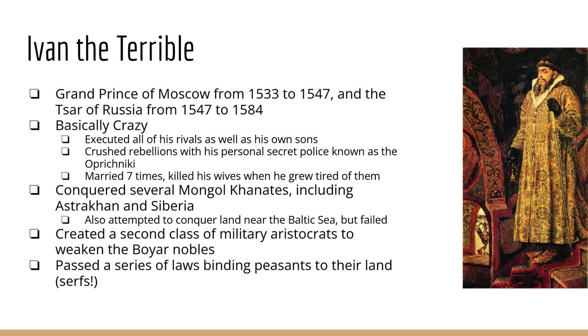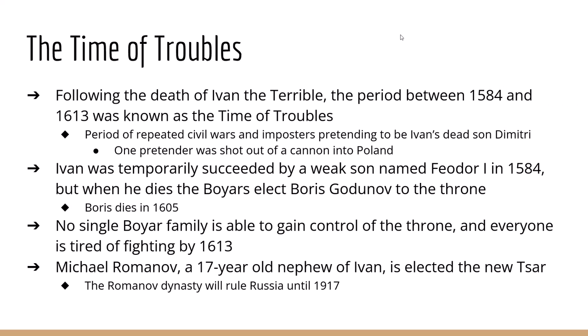Ivan conquered several Mongol Khanates, including the Khanate of Astrakhan and the territory of Siberia. He attempted to conquer lands along the Baltic Sea — modern-day Latvia, Lithuania, and Estonia — but failed. He elevated the military-stock aristocracy to be nobles in order to weaken the existing noble class known as boyars, believing this would give him more control in government. Finally, he passed a series of laws binding free peasants to their land as serfs. Serfdom had nearly disappeared in Western Europe by this time, but became a permanent part of Russian life until the late 1800s.